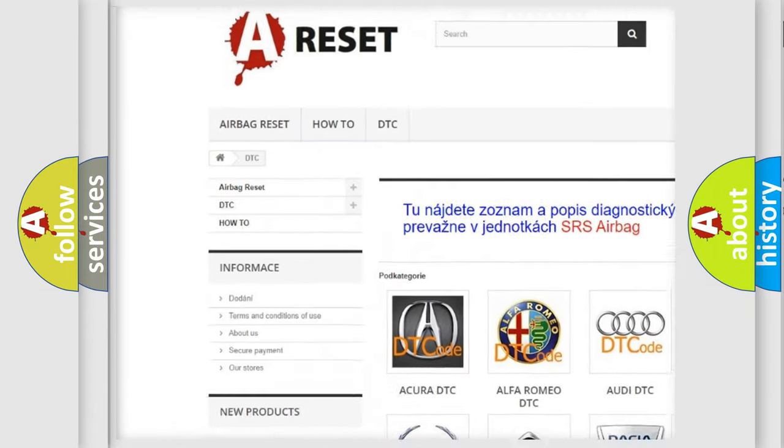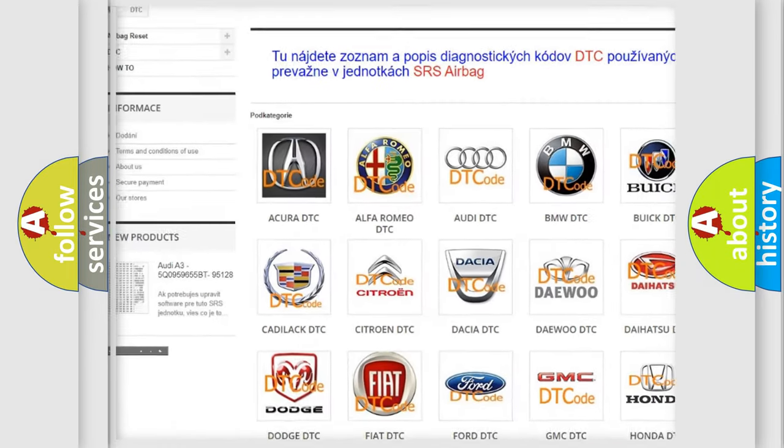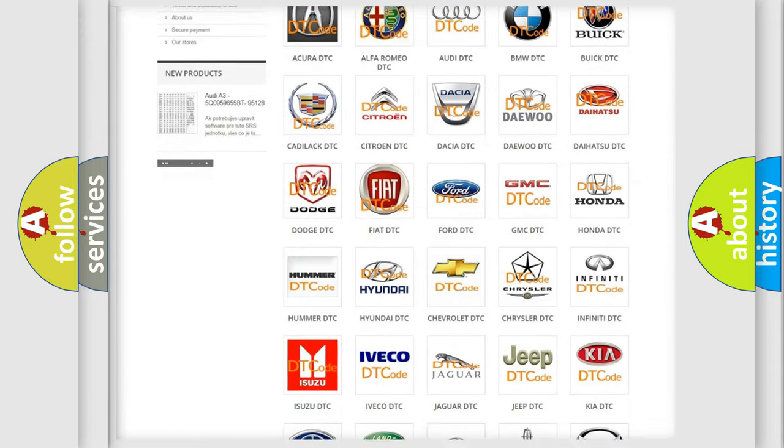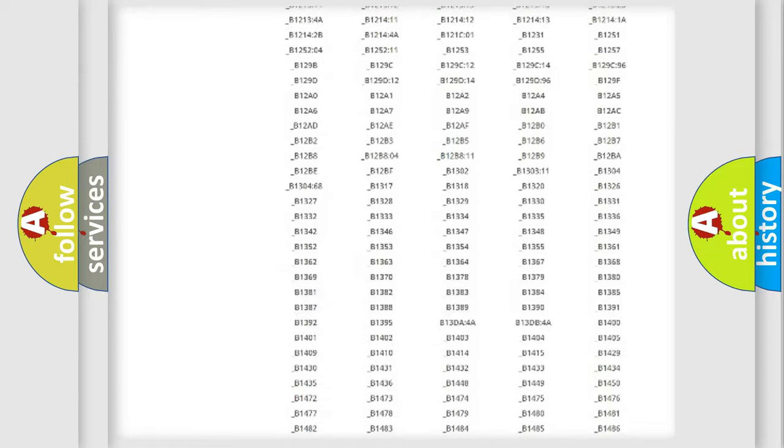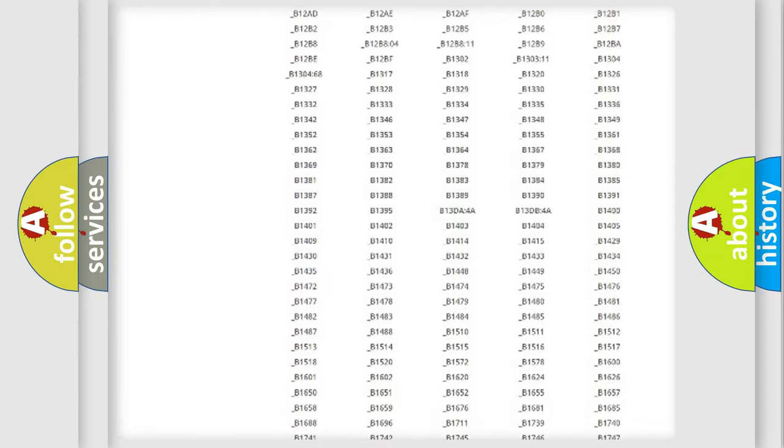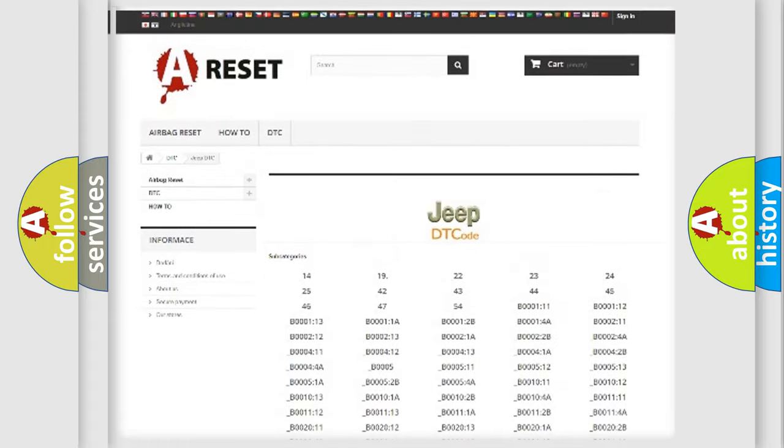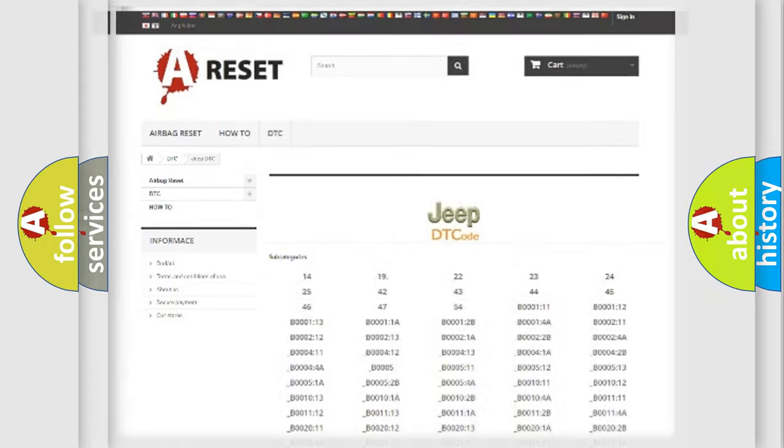Our website airbagreset.sk produces useful videos for you. You do not have to go through the OBD2 protocol anymore to know how to troubleshoot any car breakdown. You will find all the diagnostic codes that can be diagnosed in Jeep vehicles.